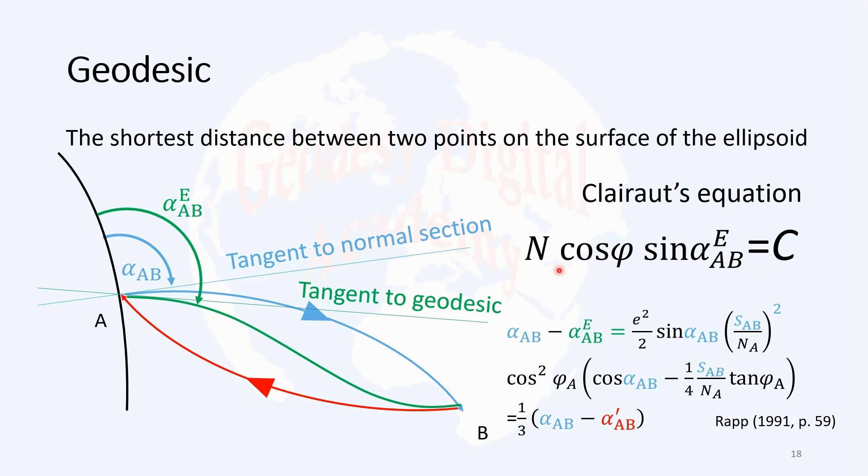All points on a geodesic satisfy Clairaut's equation. Clairaut's equation is shown here, and C is a constant called the Clairaut constant. N is the radius of prime vertical, phi is the geodetic latitude, and alpha_AB^e means ellipsoid. AB is the geodetic azimuth.